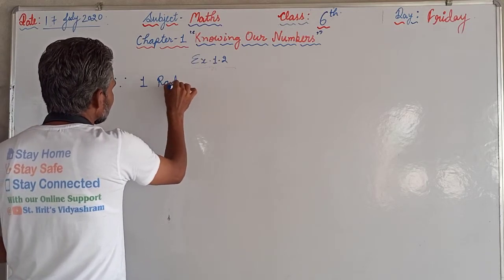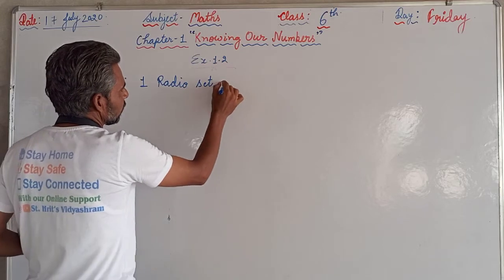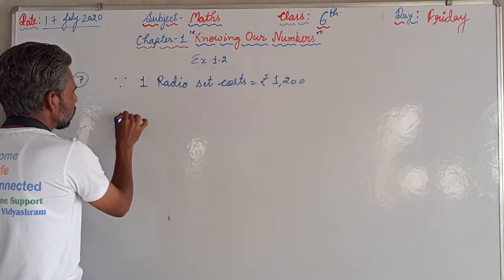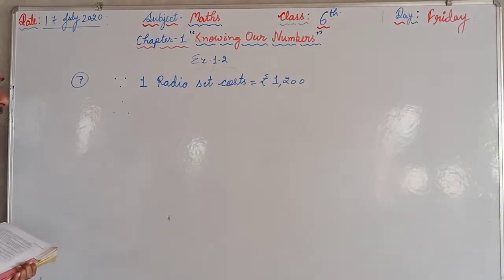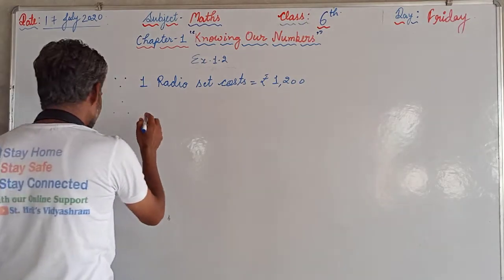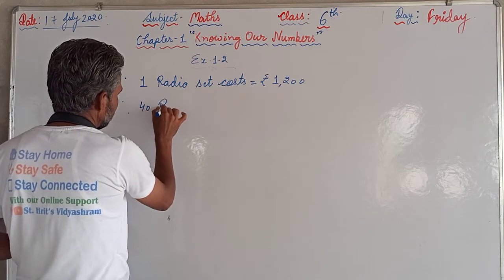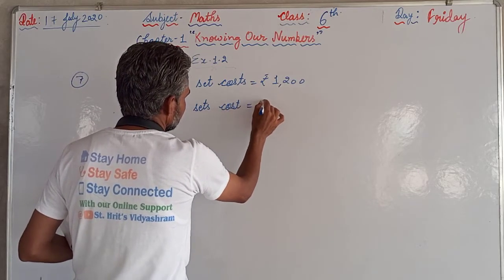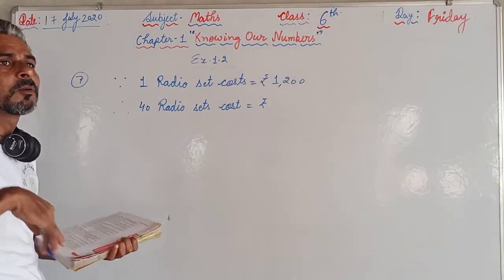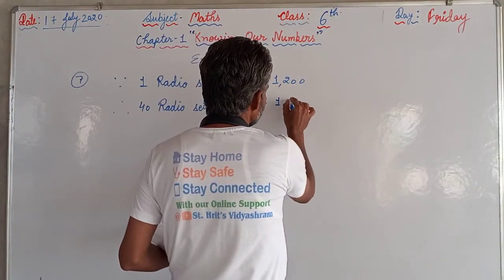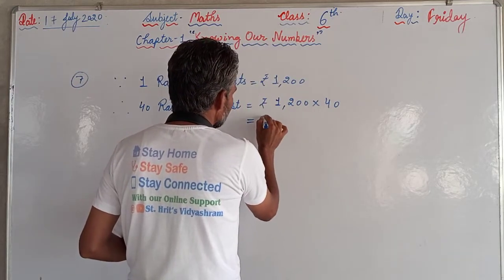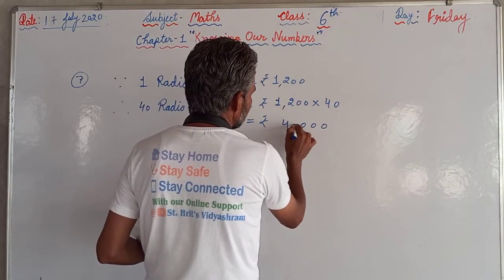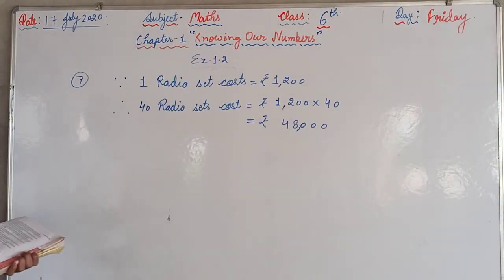The cost of one radio set is Rs 1,200. Therefore, 40 radio sets will cost more, and to find that we have to multiply 1,200 by 40. That gives us Rs 48,000. So she has already spent Rs 48,000 on purchasing the radio sets.